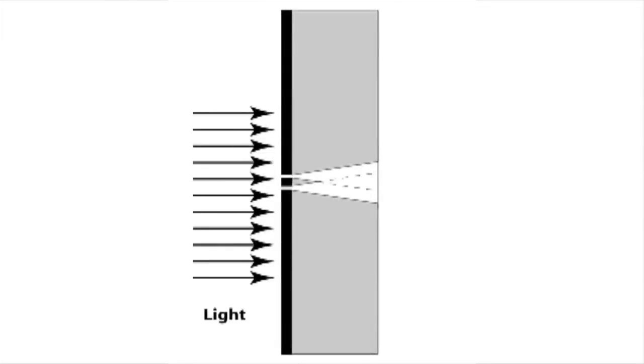If light behaved like a particle, for the double slit experiment, we would expect to see two overlapping copies of the single slit pattern. This does not match our own observations.